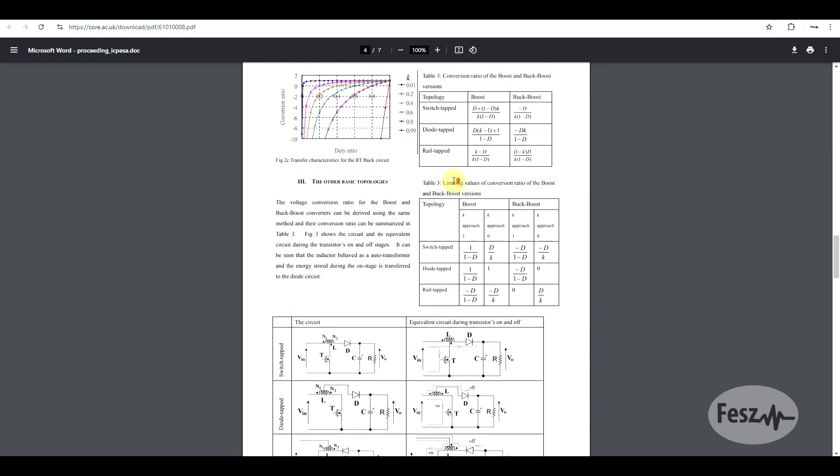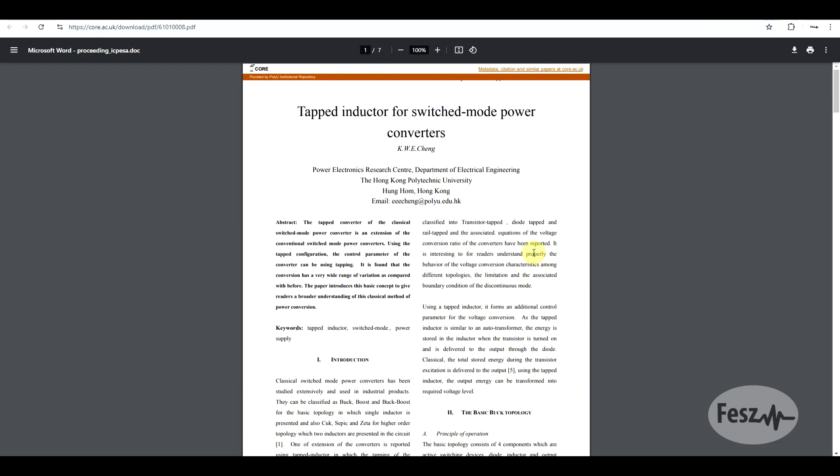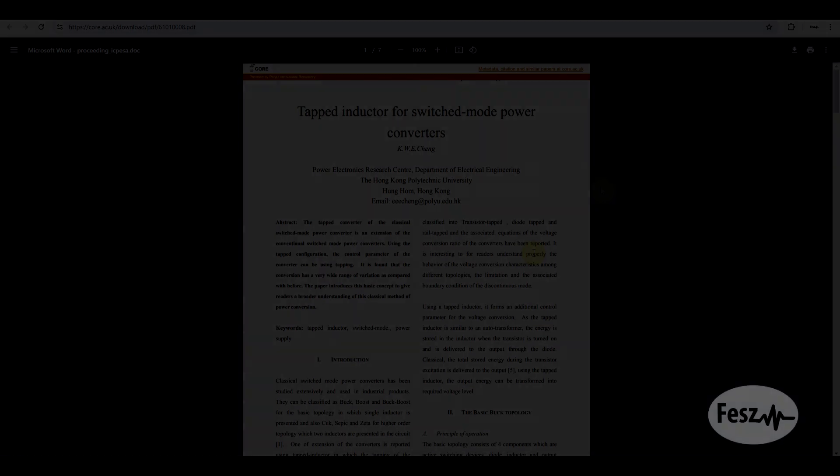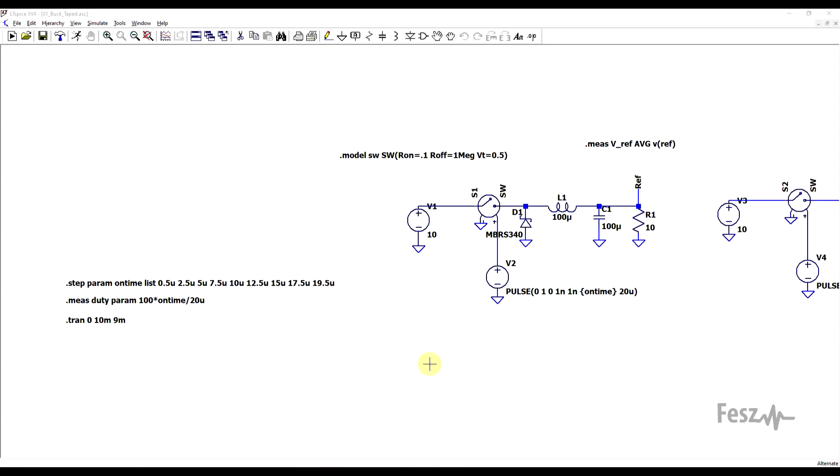But rather than going into the mathematical details today, let's try out the circuit implementations in the circuit simulator. So tapping should help in getting all sorts of variations in the voltage conversion ratio. To test this out, I built a highly simplified version of the converters, so just the power stage, and I'm supplying this from a 10V power supply, and the exact duty cycle set by this voltage source driving the switch is stepped as a parameter.